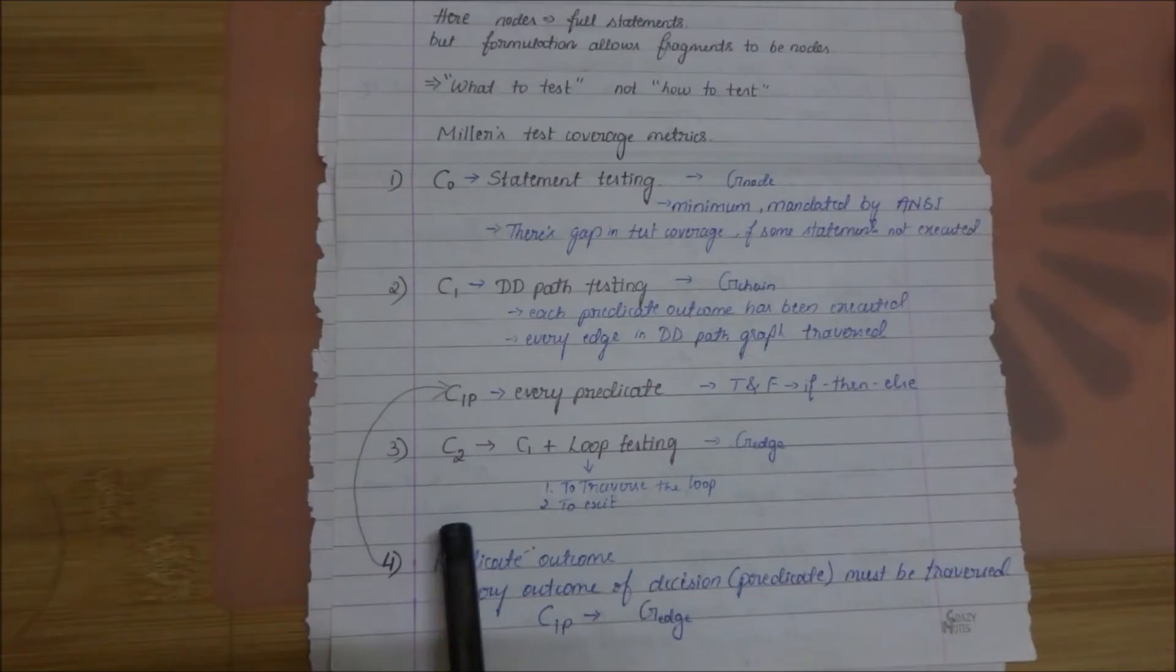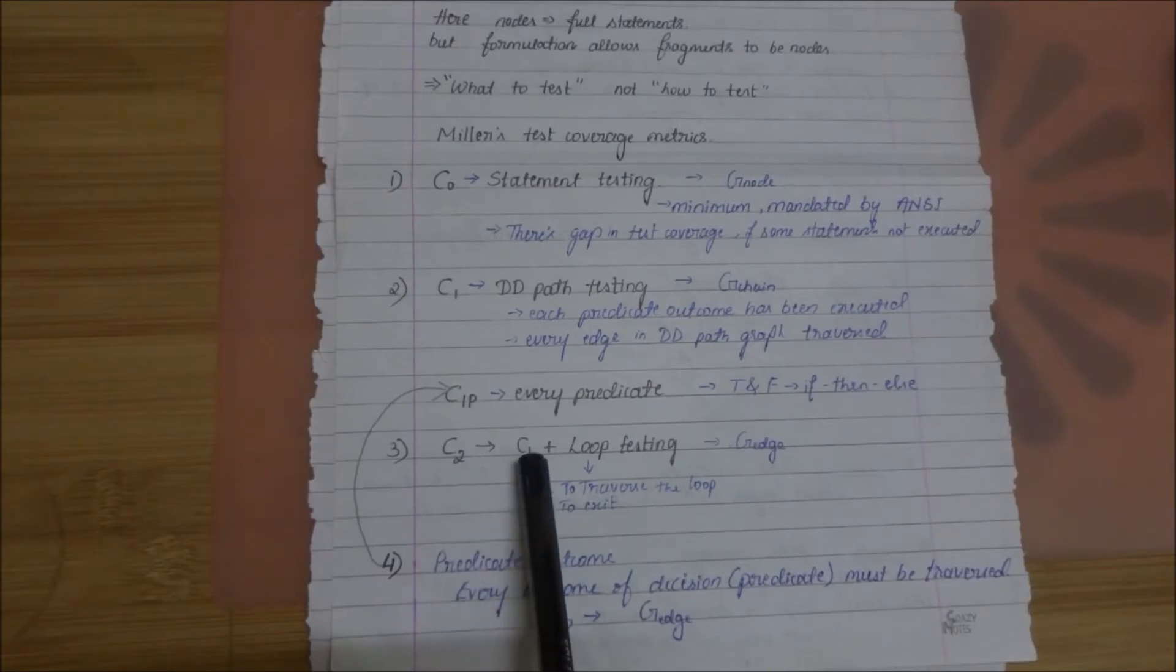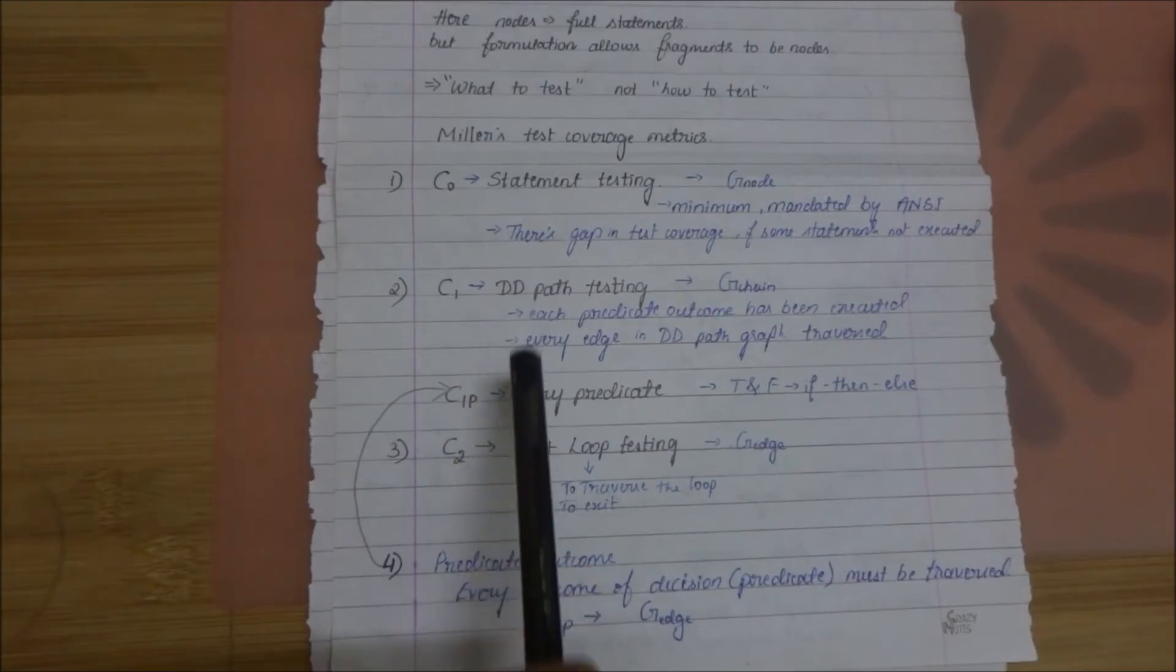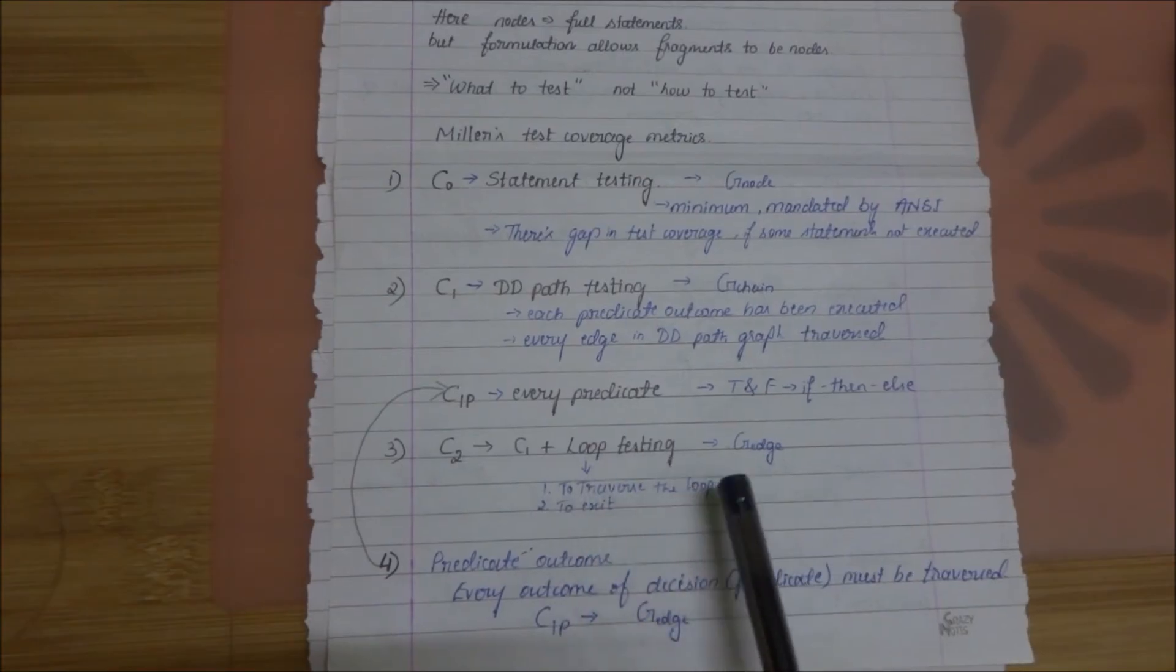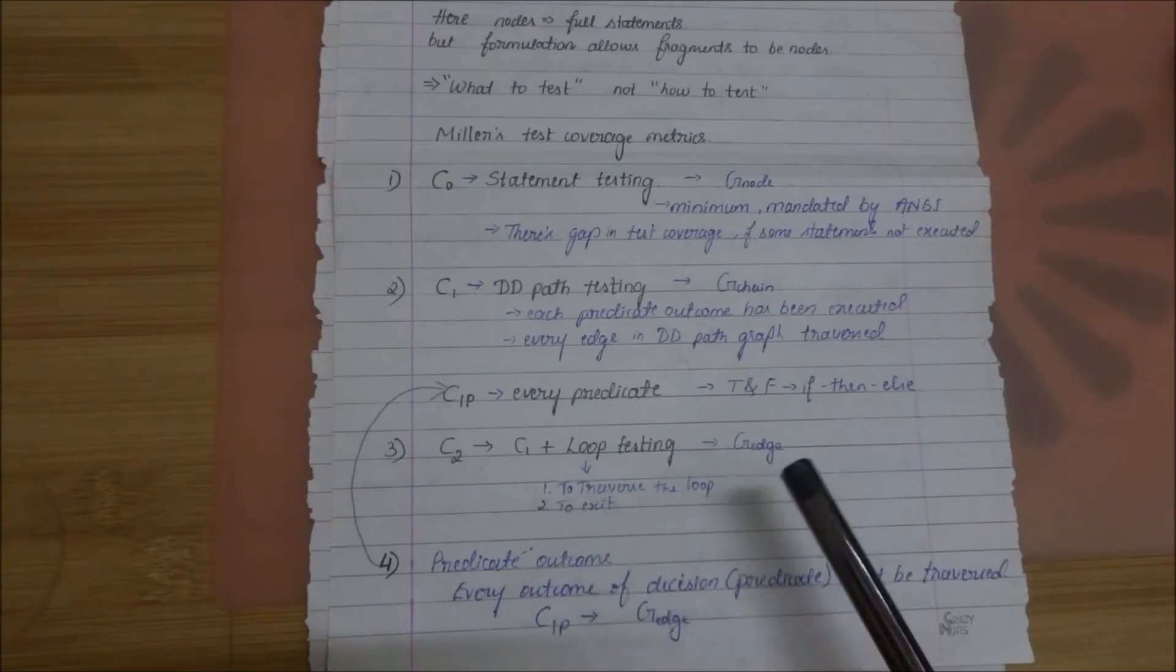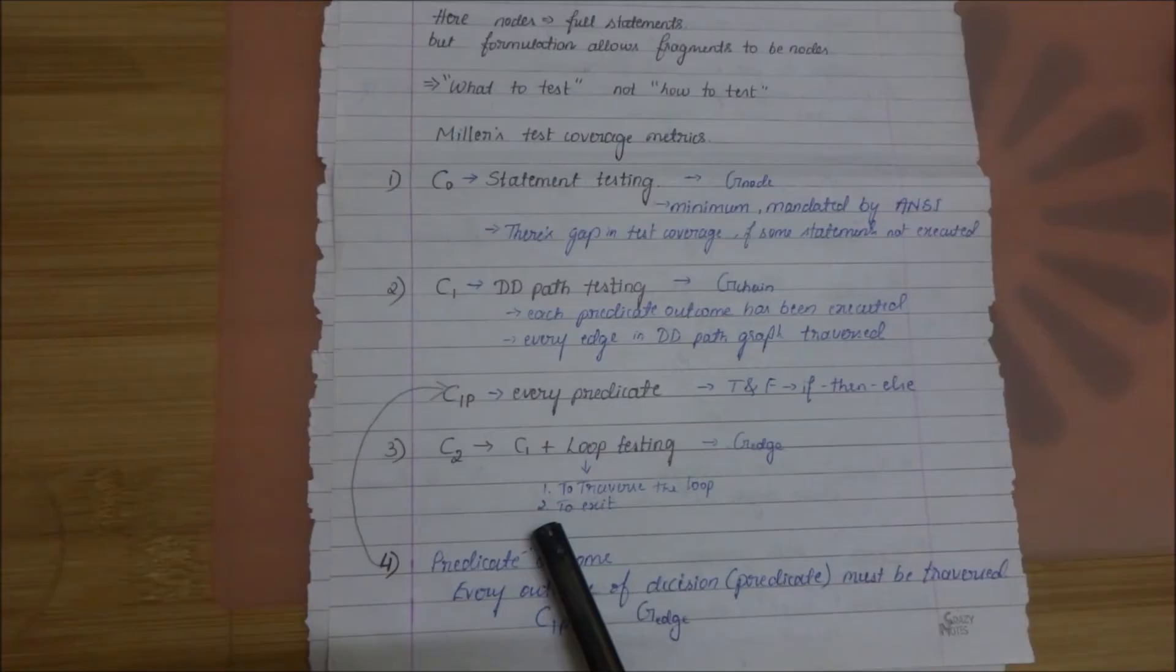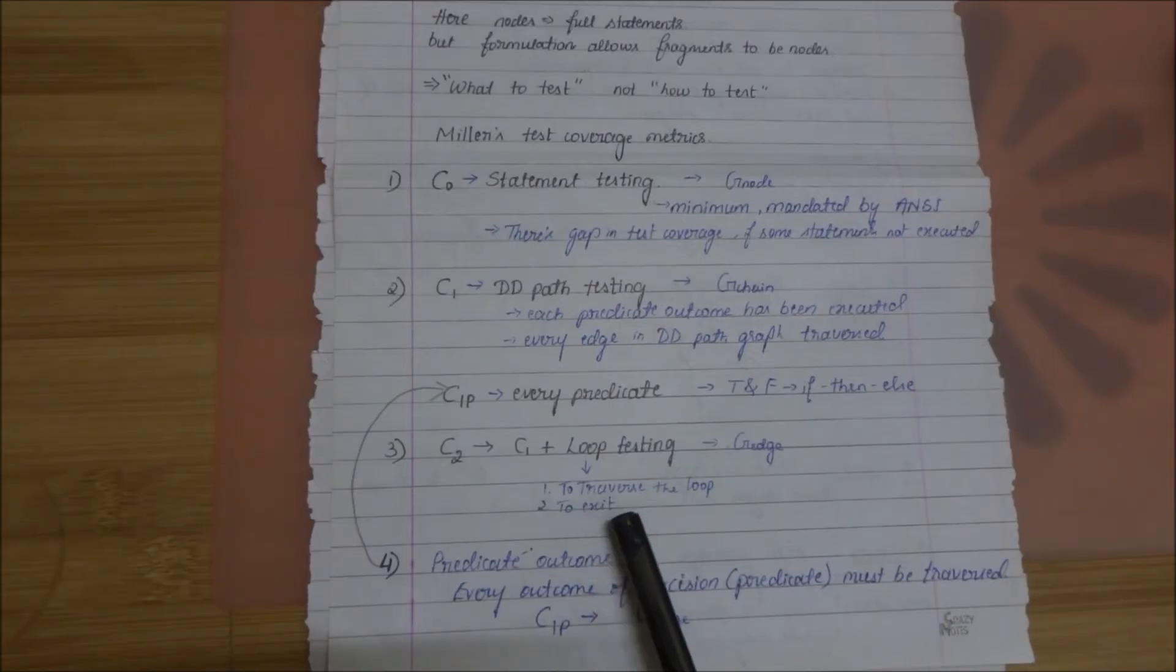The next one is C2. This is a combination of C1 that is DD path testing plus loop testing. This also can be compared with the G-edge because it includes the loop. Loop testing includes two points. One is to traverse the loop and the next one is to terminate and exit the loop.